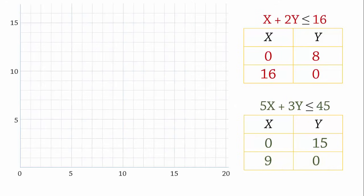Now when drawing the graph, we usually just stay in the first quadrant here where both X and Y are positive because of the non-negativity constraints. So for the first constraint, we have the points 0, 8 and 16, 0. We join those two points for the constraint line.